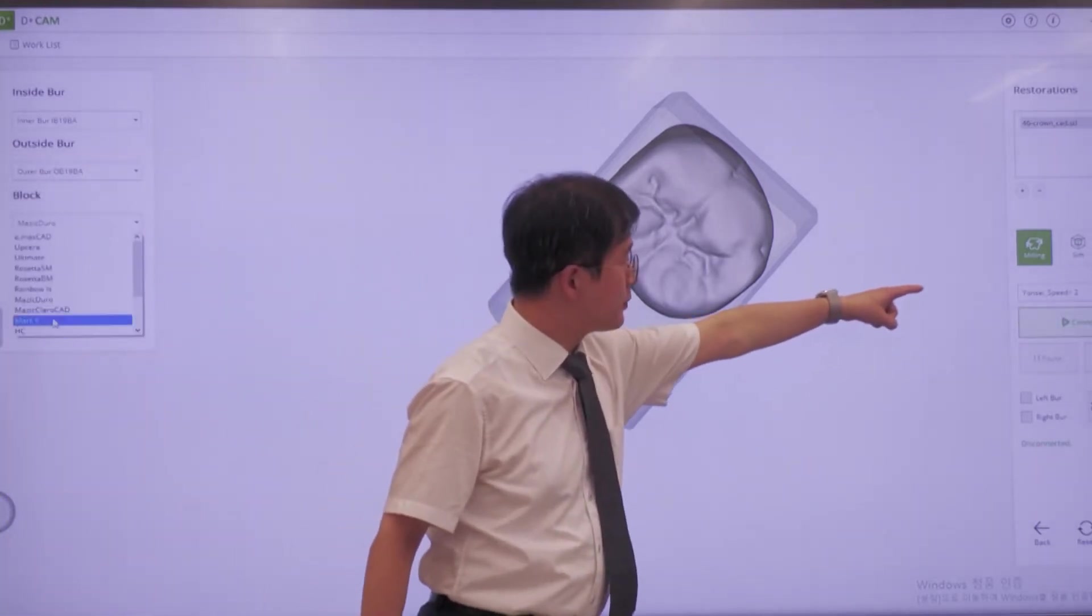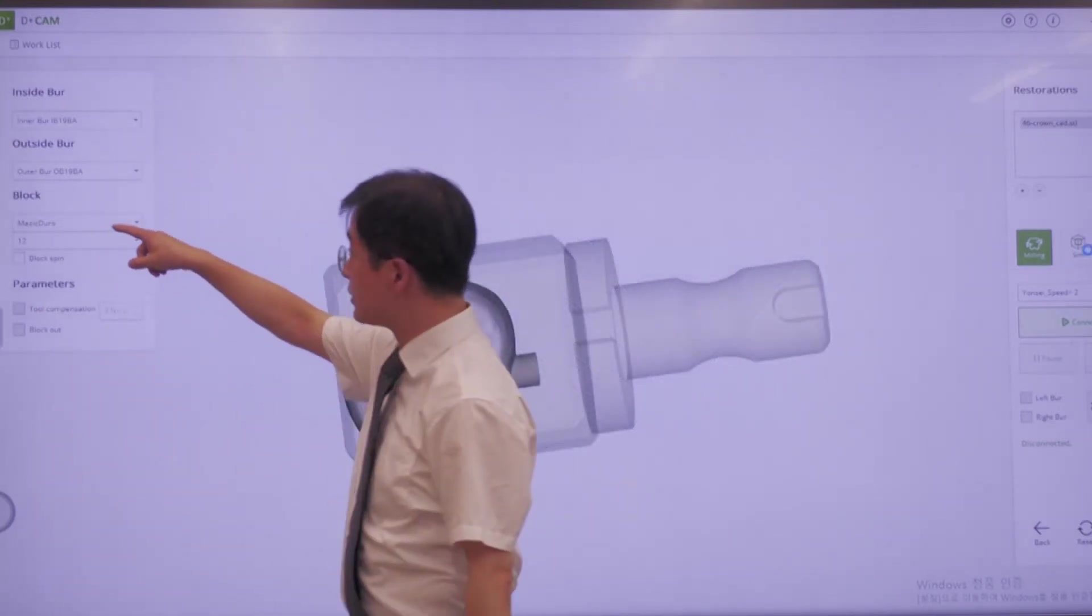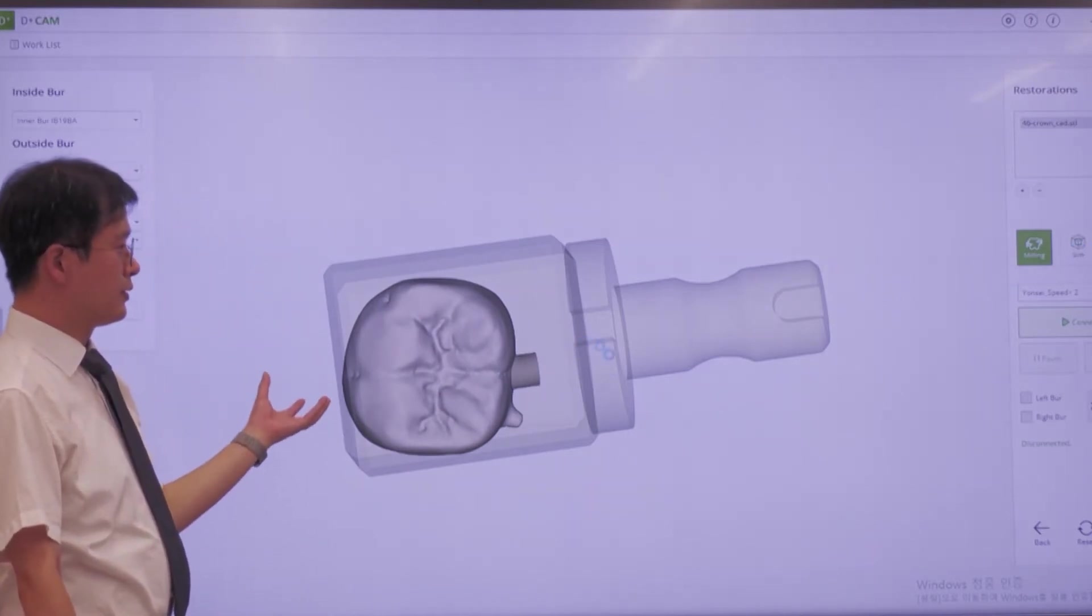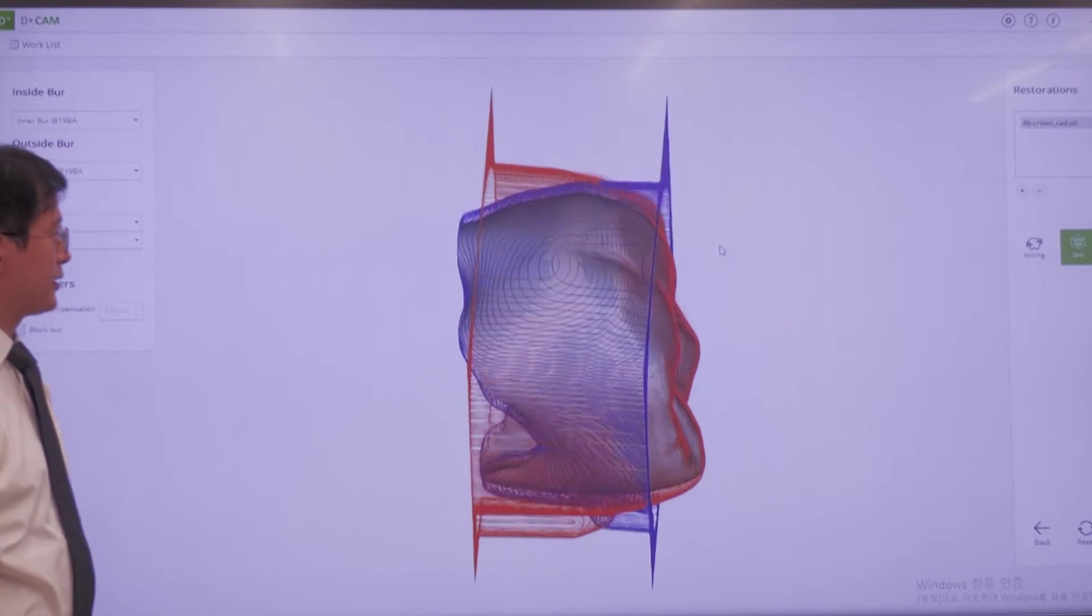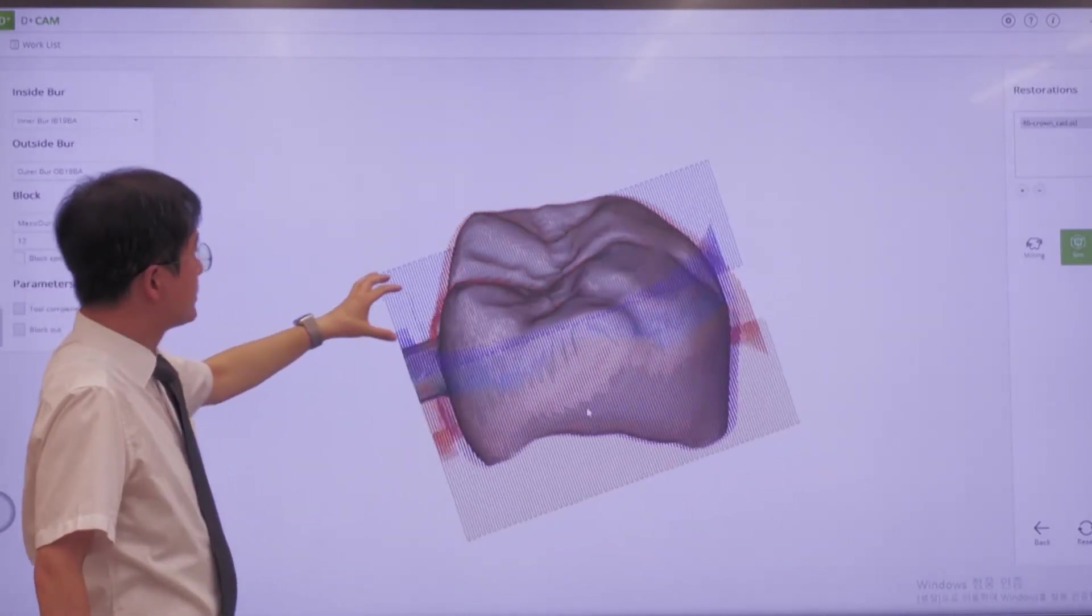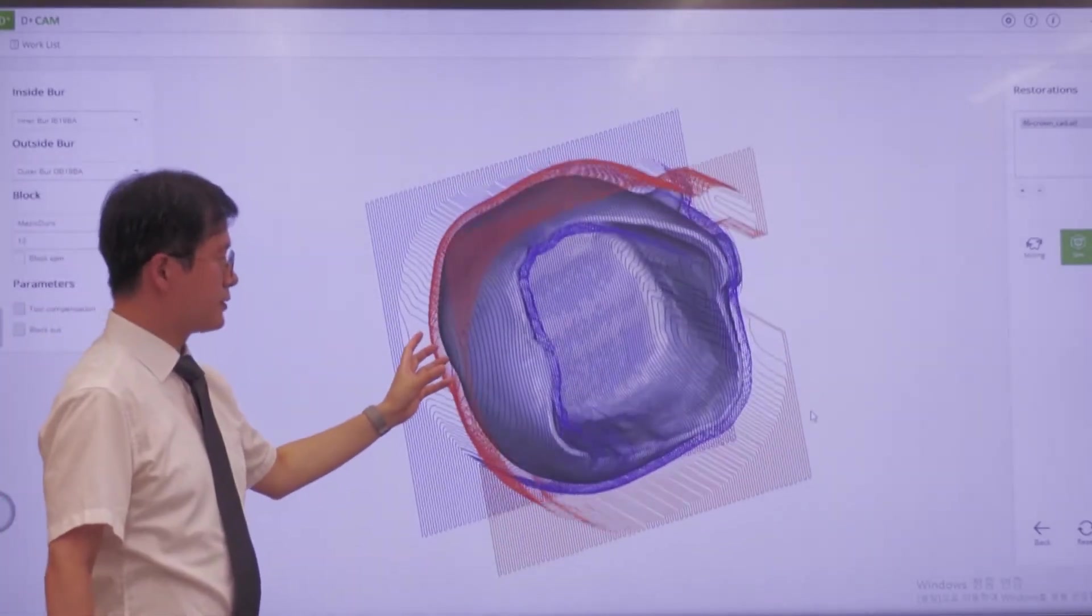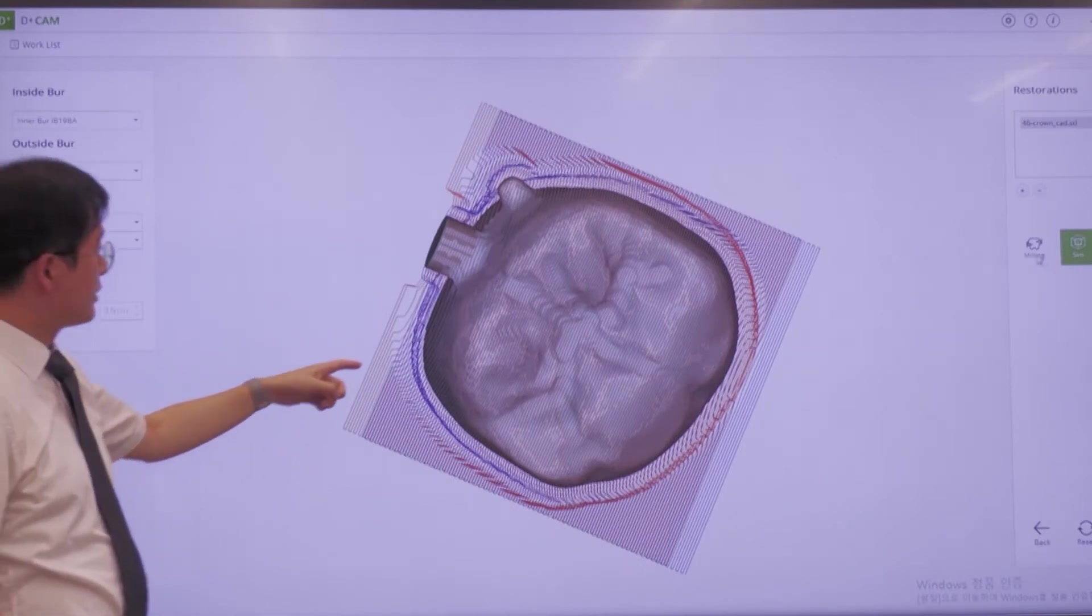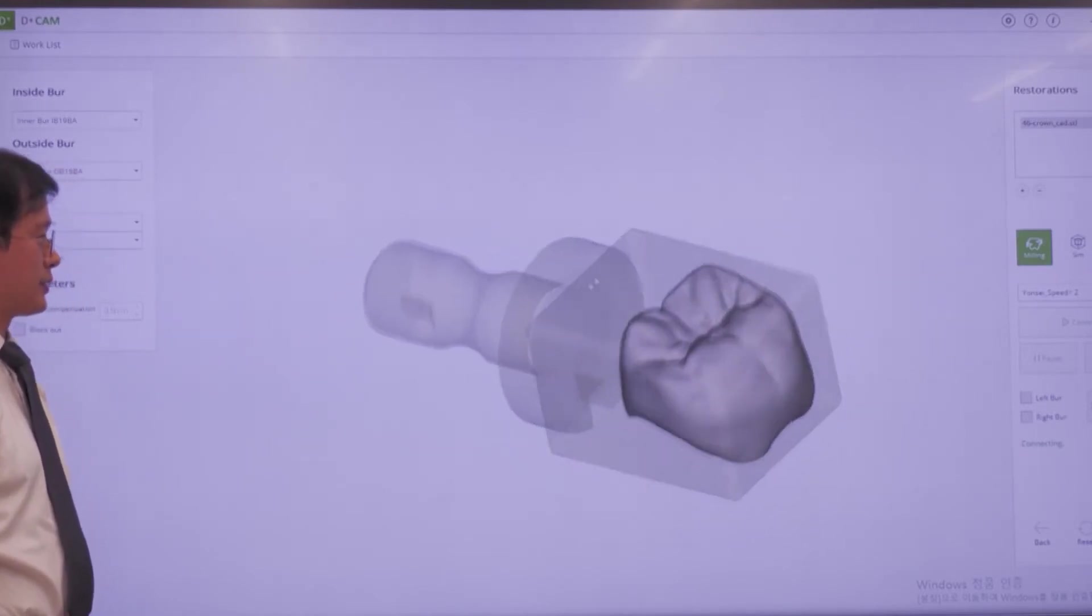Then we select the machine, milling machine, and we select the block name and size. Then we can copy the calculated toolpath data into milling machine. This is toolpath we calculated with the software. The blue color is inner cavity size milling pathful, and the orange color is occlusal side milling path, fine path and rough path. There are four milling paths in this calculation.